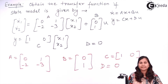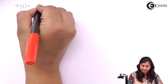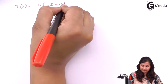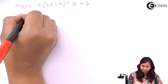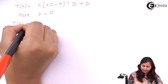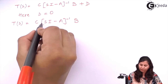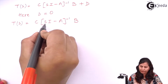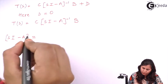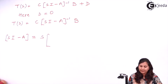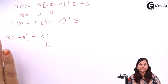We have all four matrices A, B, C, and D. The transfer function formula is T(s) equals C(sI minus A) inverse B plus D. Here D equals zero, so the formula becomes C(sI minus A) inverse B. C and B are given; we need to find (sI minus A) inverse. First we find sI minus A, using an identity matrix of the same order as A.